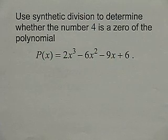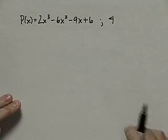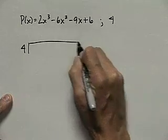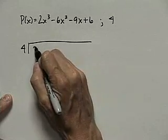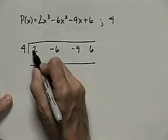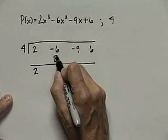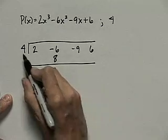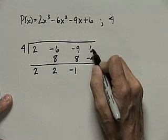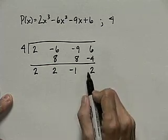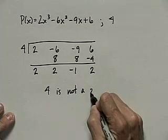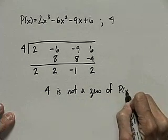Let's see how you did. Here's our polynomial, and we want to determine if 4 is a zero, so we synthetically divide by 4 and check if the remainder is 0. The coefficients are 2, negative 6, negative 9, and 6. Bring down the 2. Multiply by 4 to get 8; add to negative 6 to get 2. Multiply to get 8; add to get negative 1. Multiply to get negative 4; add to get 2. Since we got a remainder of 2, 4 is not a zero of p of x.